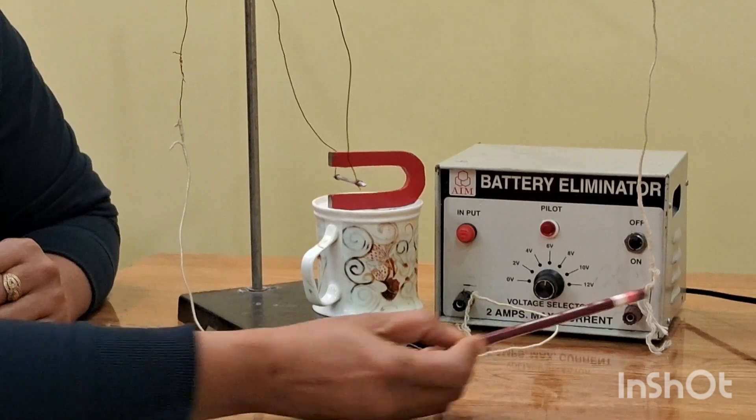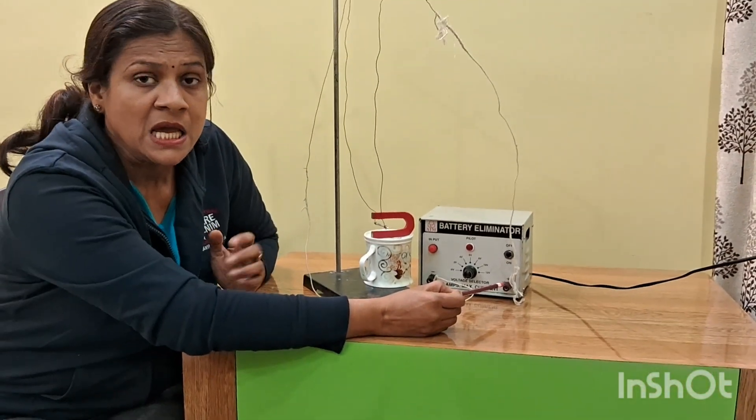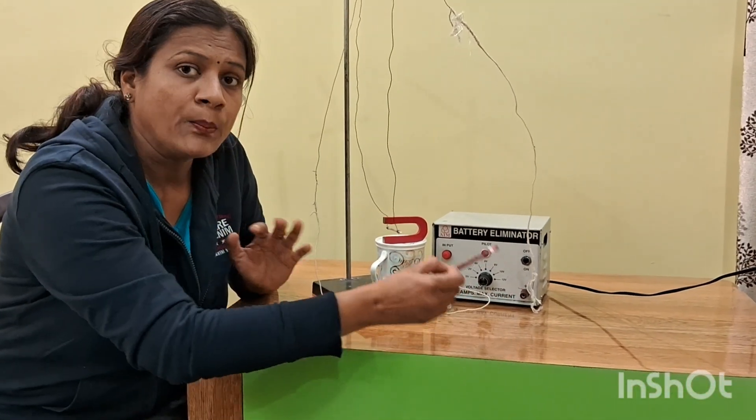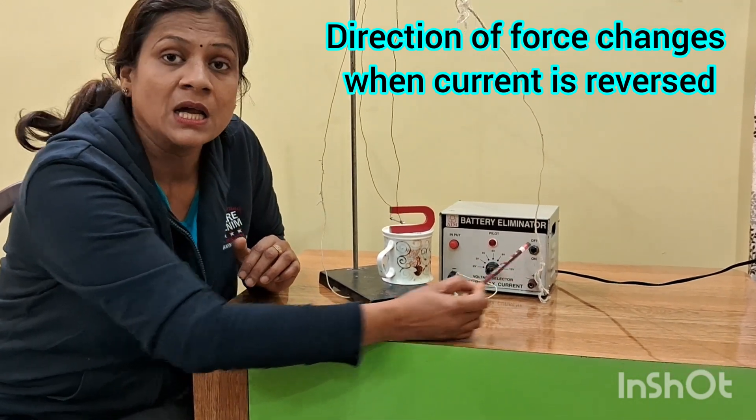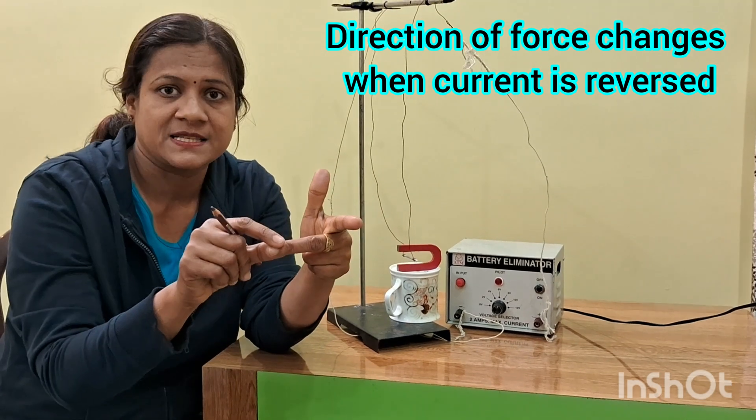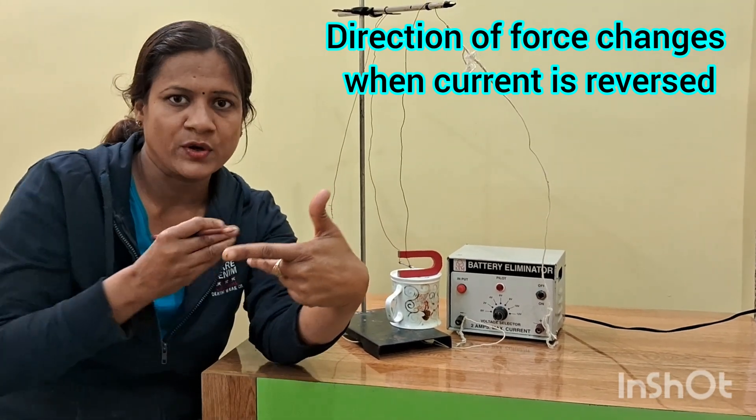The same way, if we change the direction of the current, it means if I change the polarity of these connections, if I connect this from here and this from here, direction of current will be reversed. Like in this case, the current is flowing this way.